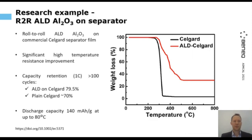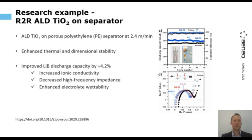Another example would be for the separators. Here is a commercial separator that has been coated with aluminum oxide, again using roll-to-roll ALD. The study was made on the temperature resistance, and the coated film tolerates much higher temperatures, which adds safety to the battery application. Another example on the separator is use of titanium oxide ALD coating, and that not only enhanced the thermal stability, but also improved the wettability and ionic conductivity, and thus actually improved the discharge capacity as well — so multiple functions there.